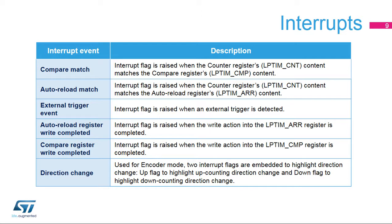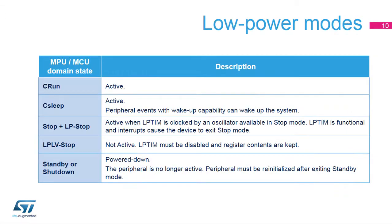The up and down direction change interrupts are raised when the encoder mode function is enabled and the counting direction changes from up to down or vice versa. The counting direction of the low-power timer's counter reflects the rotation direction of the quadrature sensor.